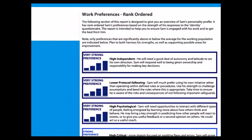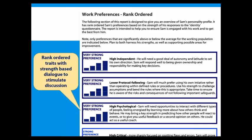Moving on to the actual Identity onboarding report. As mentioned, we break it into two sections. The first is work preferences, and these are rank ordered. Based on their Identity profile, it rank orders where they have the strongest preferences — slightly strong, just strong, and then marked preferences — and gives a little bit of information about that area of personality.